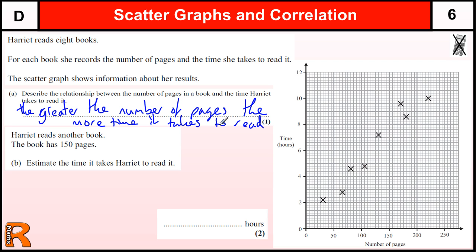Or, more succinctly, if we use the phrase correlation, we can just describe that as positive correlation, which means that as one thing increases, the other one increases as well.